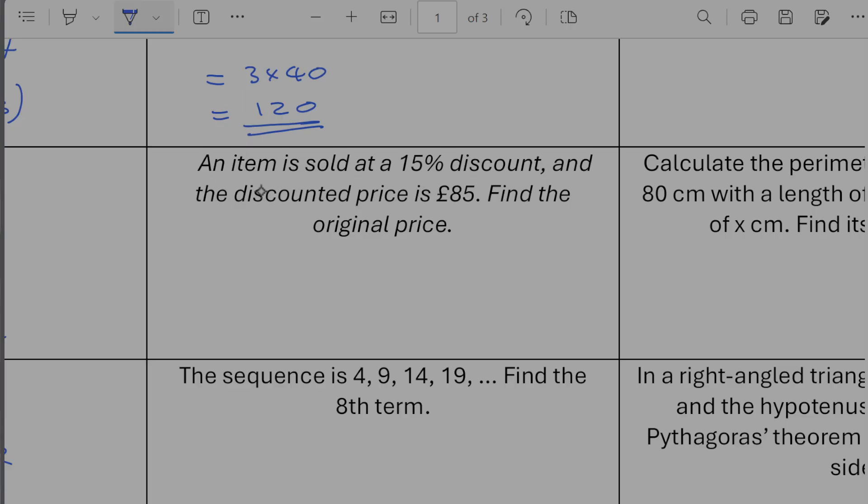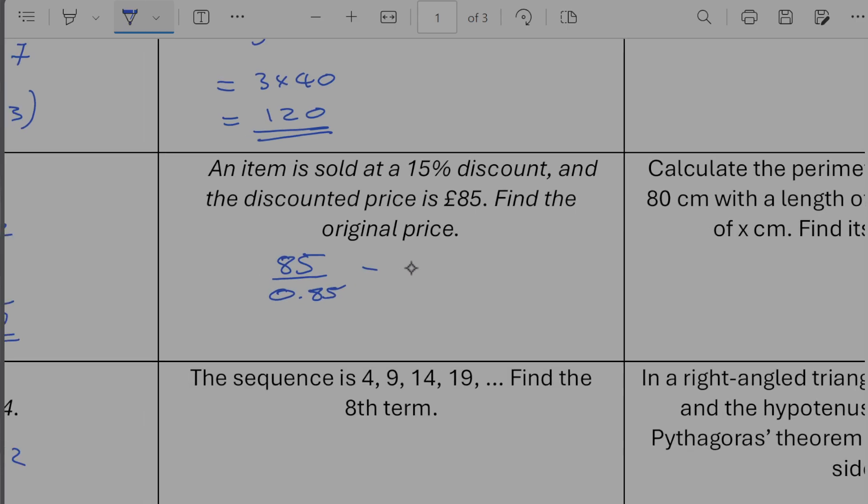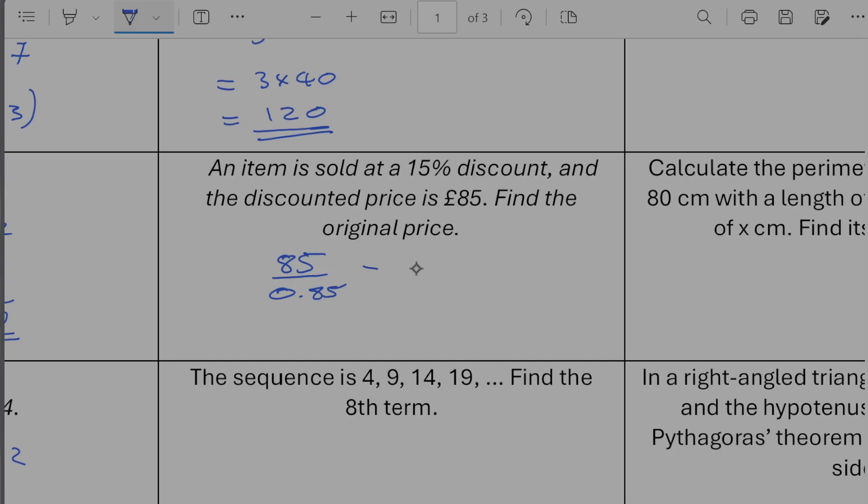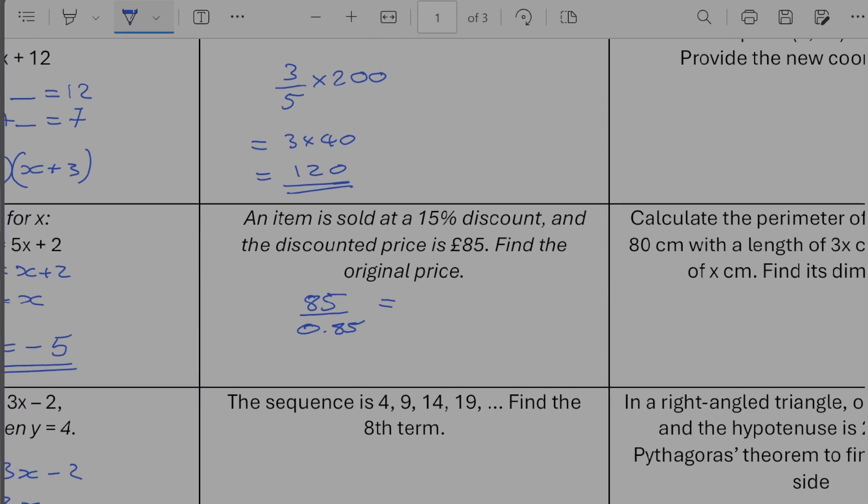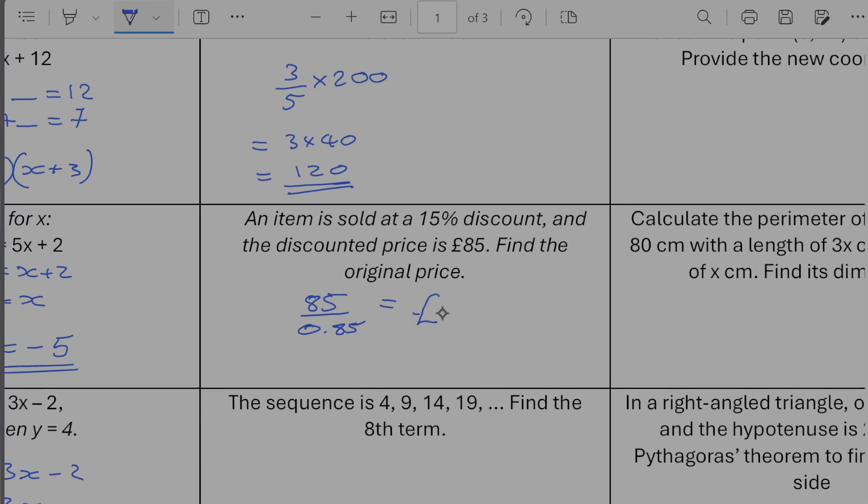An item is sold at 15% discount and the discounted price is 85 pounds find the original price. So 15% discount means that we are paying for 85% of it which works out exceptionally nice. So 85 divided by 0.85 is going to give us 100.